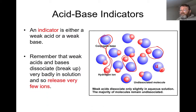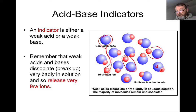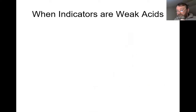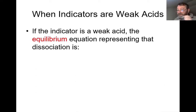Remember that weak acids and weak bases do dissociate but very badly — they don't produce an awful lot of their alternative ions. On account of that, we get a dynamic equilibrium set up, but it doesn't go very well to completion; it doesn't go very well to the right-hand side at all. But using Le Chatelier's principle, let's look at the dynamic equilibrium that exists in our indicators.